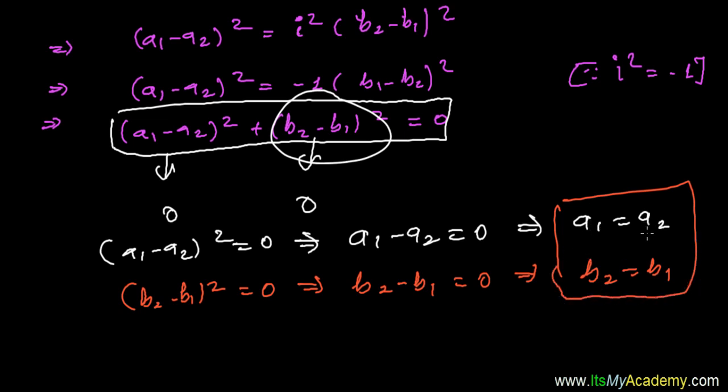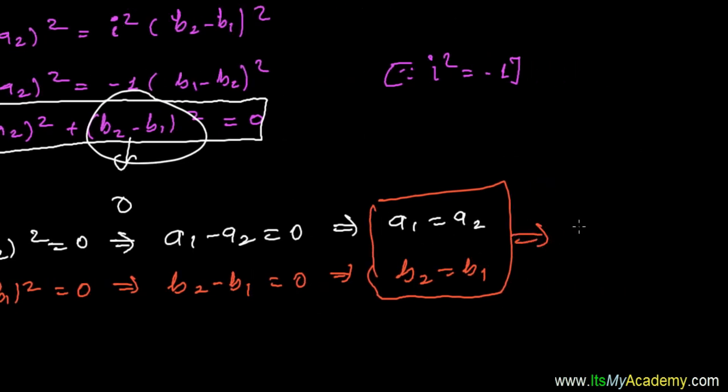So here we get the condition when two complex numbers get equal: if a1 equals to a2 and b2 equals to b1. Then I can say that the two complex numbers Z1 equals to Z2 if the real part of both complex numbers is equal.